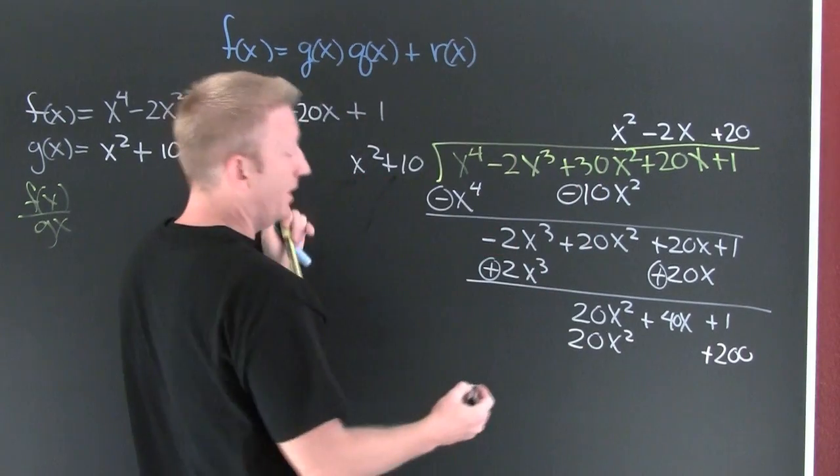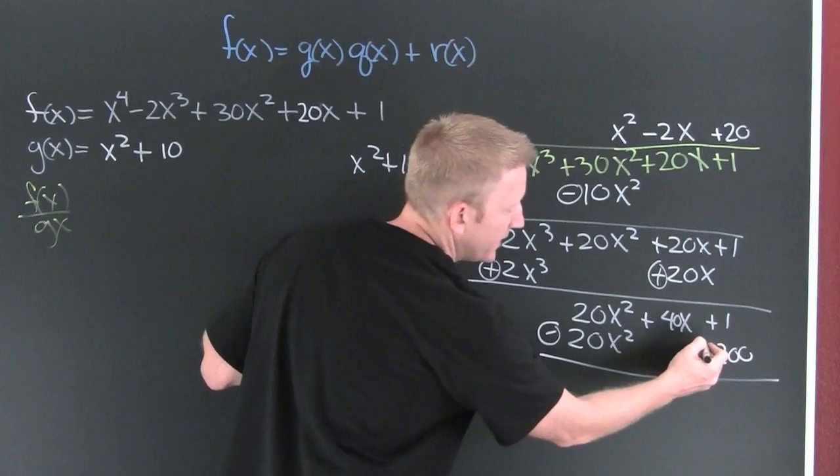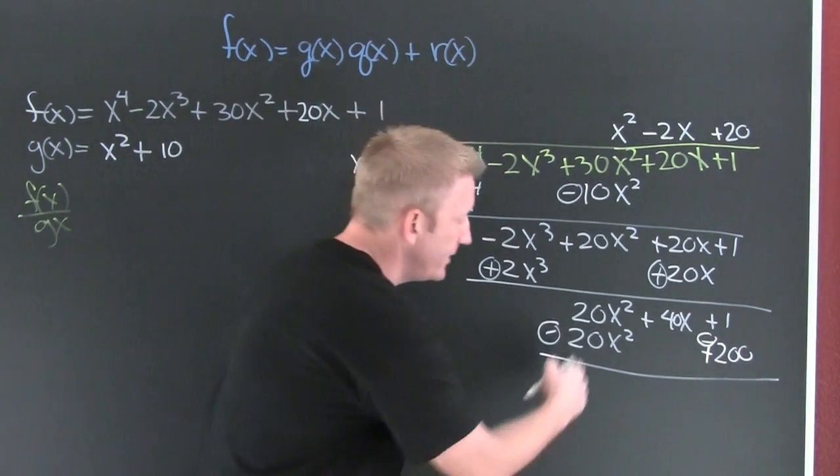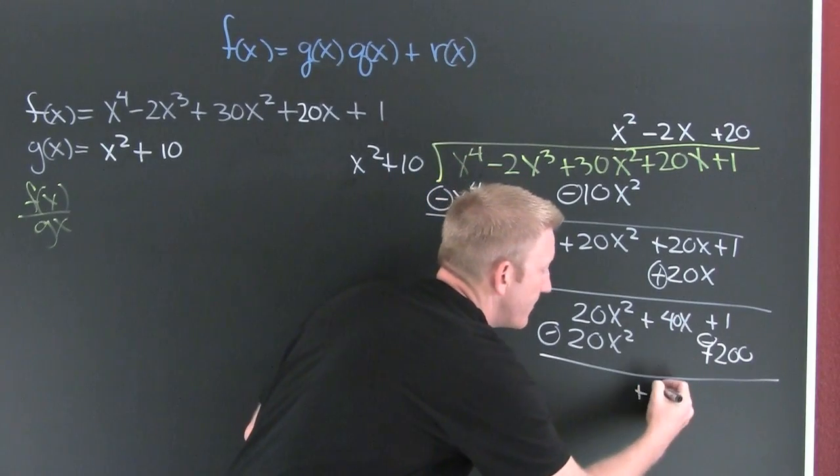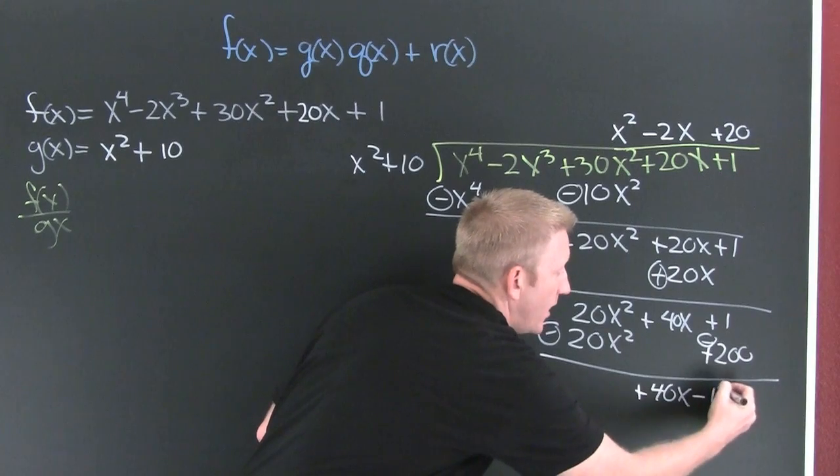And then I change the sign. I like to circle it, lets me know I changed it, and I add down. No x squared, the desired effect. Plus 40x minus 199.